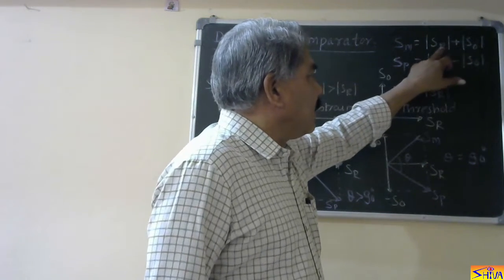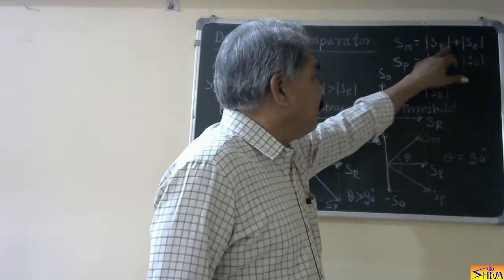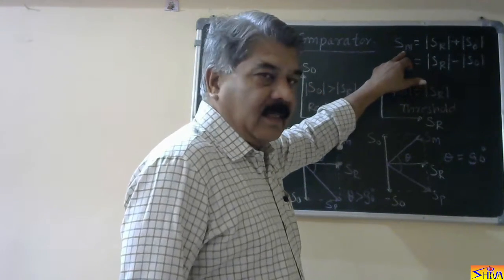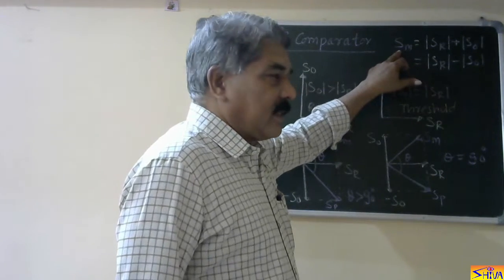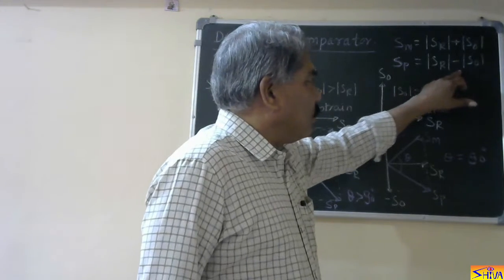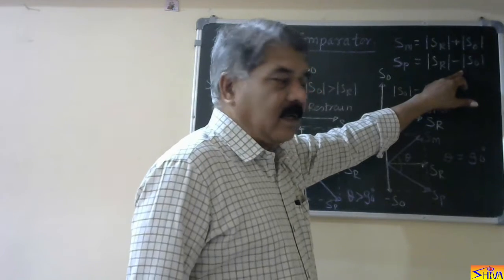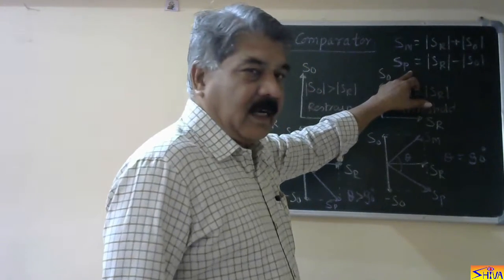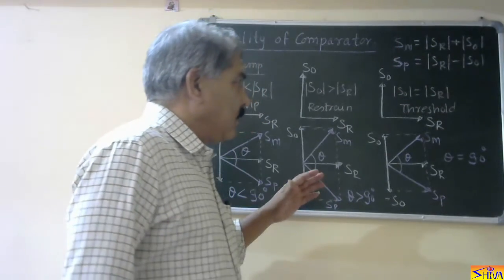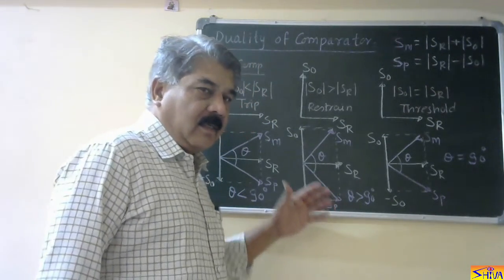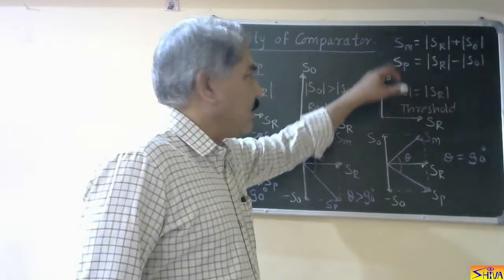These are the original inputs of the amplitude comparator: SO and SR. We are taking the sum, SO plus SR, as SM — that is the measuring or operating quantity for the phase comparator. SR minus SO, the difference, is taken as SP — that is the polarizing or reference quantity. Now let us see how phase comparison can be obtained by these converted quantities.